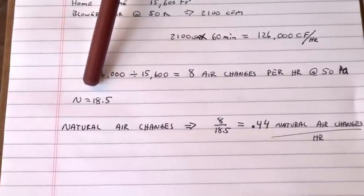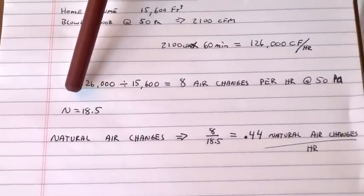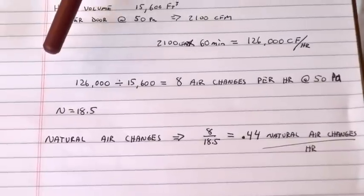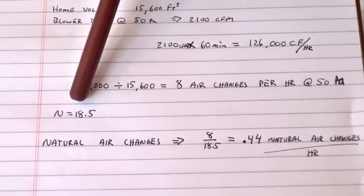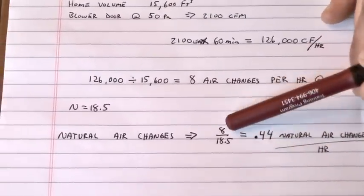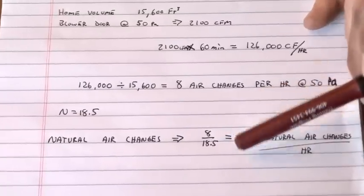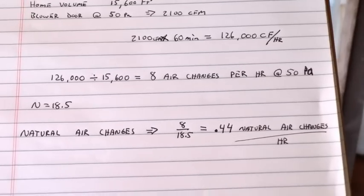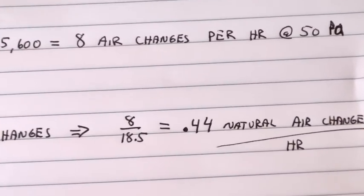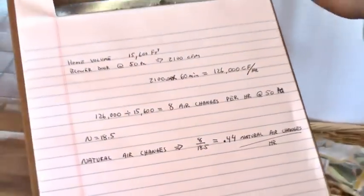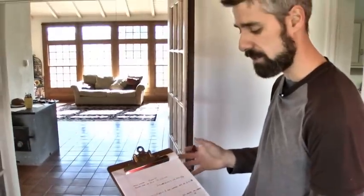Every area has an N value to calculate the amount of natural air changes — meaning if there's no wind on your house and you don't have a blower door set up, that's how many air changes you get naturally. The N value for our area is 18.5. So I take eight air changes per hour at 50 pascals and divide by our N value of 18.5, and I get 0.44 natural air changes per hour. The target — the tightest you really want to get a house, at least based on our standards — is about 0.35 air changes per hour. So 0.44 is really not all that bad.